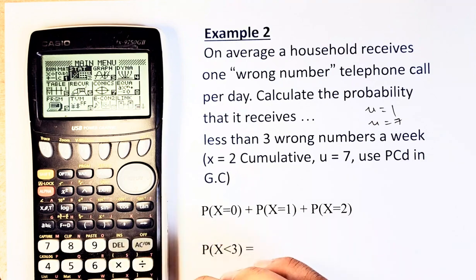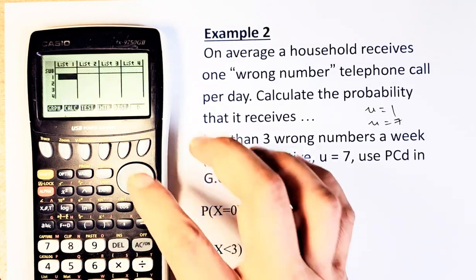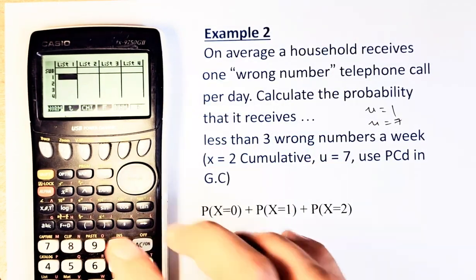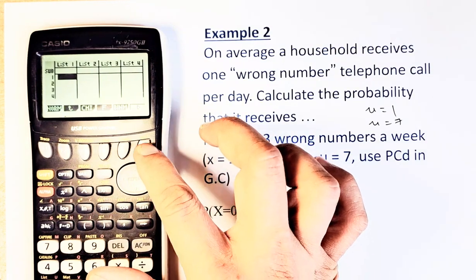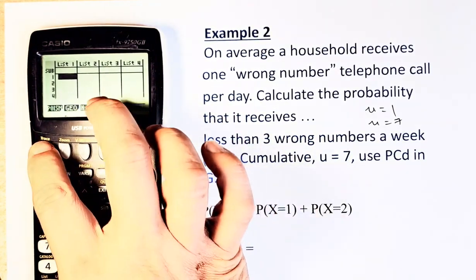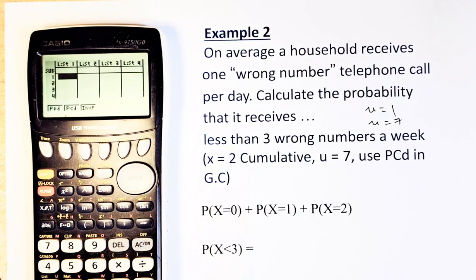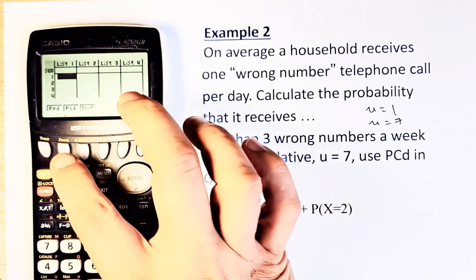So what you do again, go to Stats, as usual. Then you go to Distribution, F5. There's no binomial. Go to F6 to get more. And then now you go to F1, Poisson. This time you have to do PCD. PCD is F2.